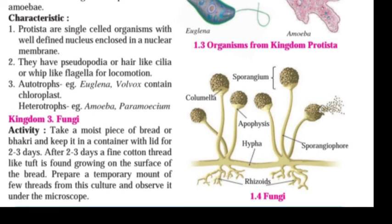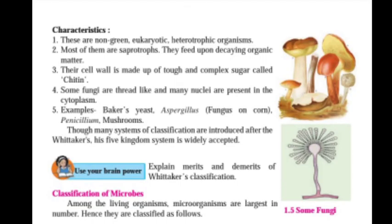For Kingdom Fungi, take a moist piece of bread or bhakri and keep it in a container with a lid for 2–3 days. After 2–3 days, you will notice fine cotton-like thread structures growing on the surface of the bread. Prepare a temporary mount of a few threads from the culture and observe under the microscope. The cotton thread-like structures you observe are fungi.